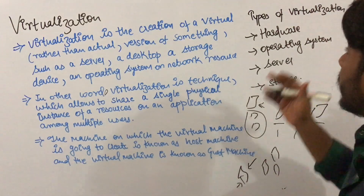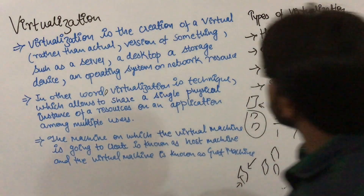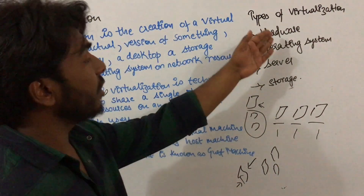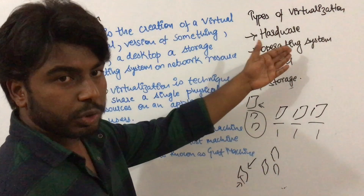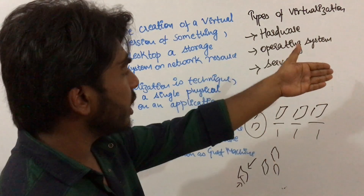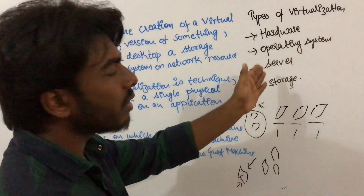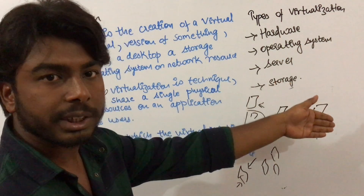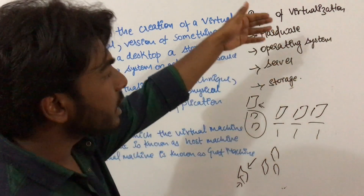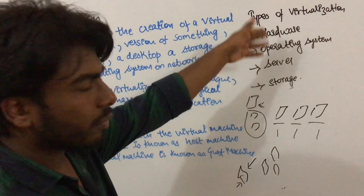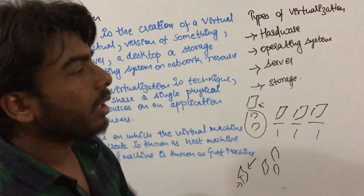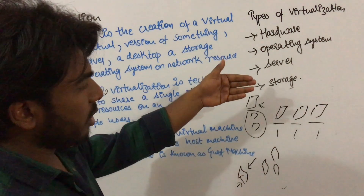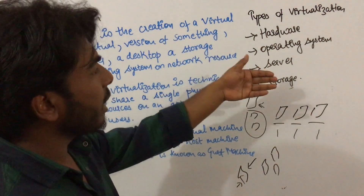There are four types of virtualization: hardware virtualization, operating system virtualization, server virtualization, and storage virtualization. These are the main types of virtualization. We will discuss them in upcoming lectures.